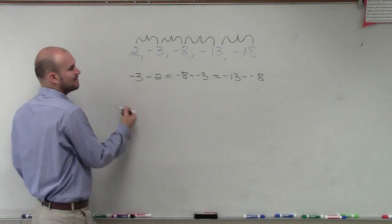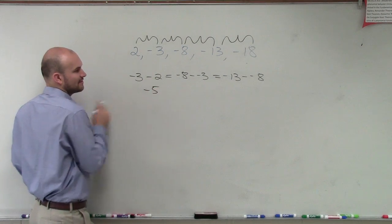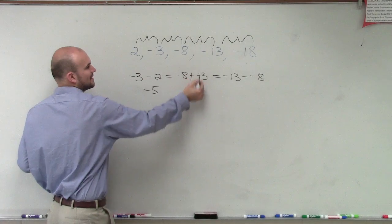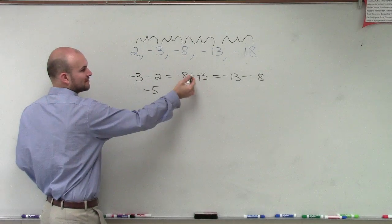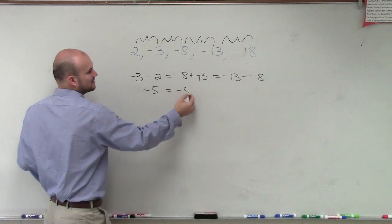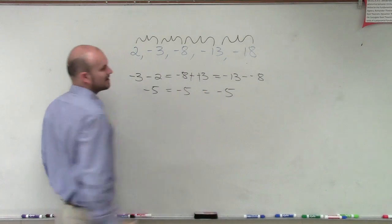So negative 3 minus 2 is negative 5. Negative 3 minus a negative 3, or negative 3 is going to now be positive, so that equals negative 5. And that also equals negative 5.